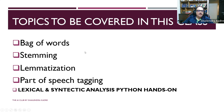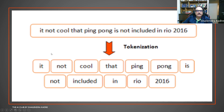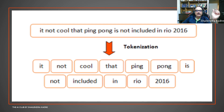This is the agenda — more or less what we covered yesterday. We'll see it in a bit more detail today. First, we'll repeat tokenization. For example, the sentence 'It is not cool that ping pong is not included in Rio 2016' — doing tokenization means each word is broken into a separate token, separated by commas. So 'it' is one token, 'not' is one token, 'cool' is one token, 'Rio' is one token, '2016' is one token. Each word is a unit called a token, and we break a sentence down to the token level so that pre-processing is easier.